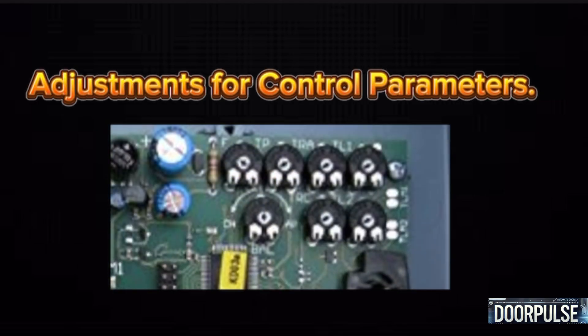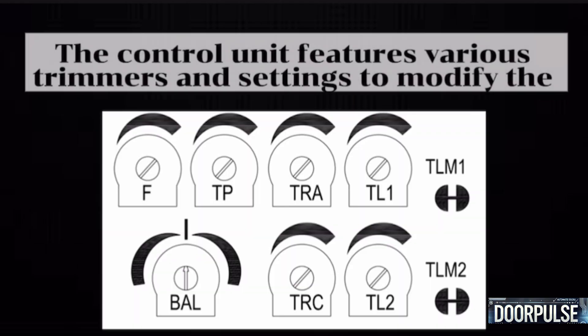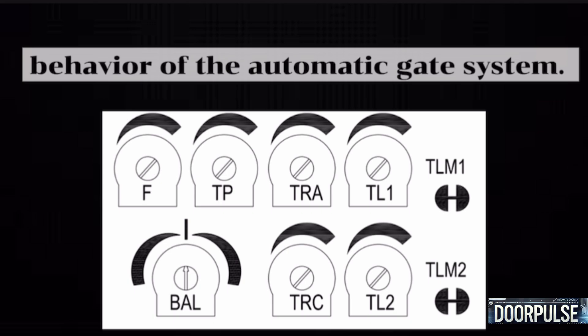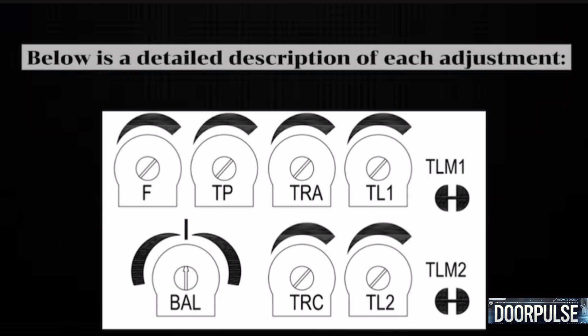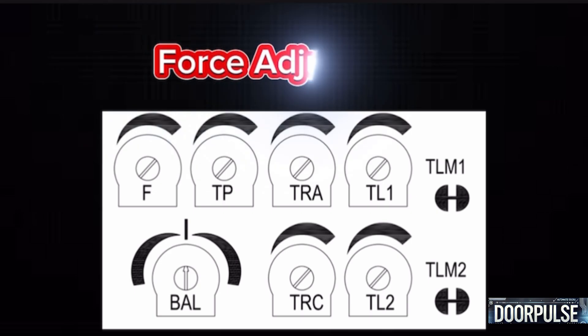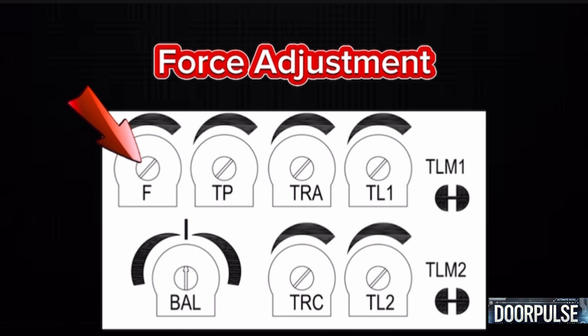Adjustments for control parameters. The control unit features various trimmers and settings to modify the behaviour of the automatic gate system. 1. Force adjustment — regulates the force applied by the motors during gate movement. Adjust this parameter carefully, as excessive force can compromise the safety of the system. Fine-tuning should be performed through trial and error, ensuring the applied force meets regulatory safety standards. Use a force gauge if necessary to measure compliance.